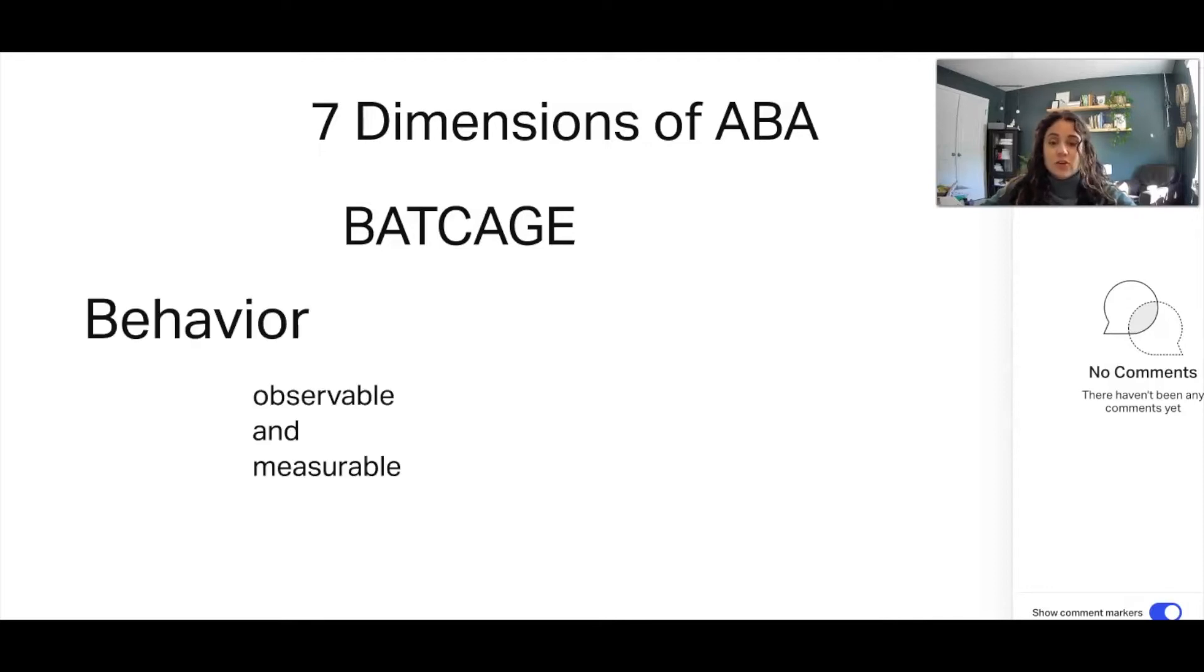The first term in BATCAGE, the first dimension of ABA, is Behavior. This term emphasizes the importance of identifying behaviors for change that are observable and measurable. We know with radical behaviorism this can include private events. If we're going to pick a behavior for change that's internal, we need to make sure we create some type of report.